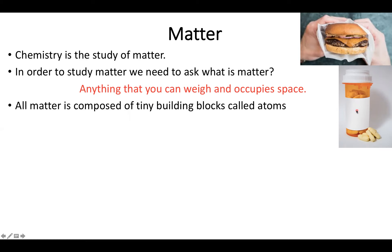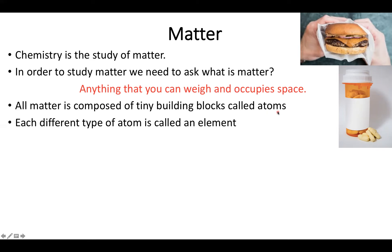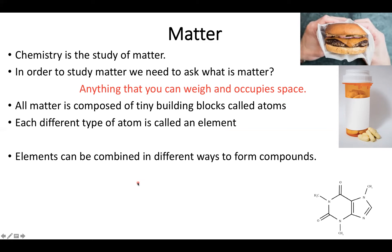One of the defining things of matter is that they're all built of tiny building blocks called atoms. We'll talk a lot more in detail later about atoms, but for now it's suffice to say that they are pretty much the Legos of the universe. Each different type of atom, or each different type of Lego, is called an element. Just like it's hard to build a Lego building all out of one type of block, it's hard to build matter all out of one type of element. So you can combine these elements in different ratios and ways to make different compounds.